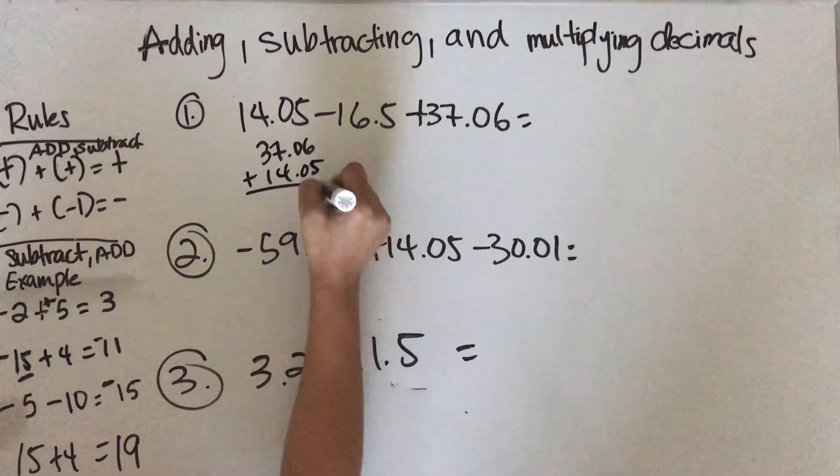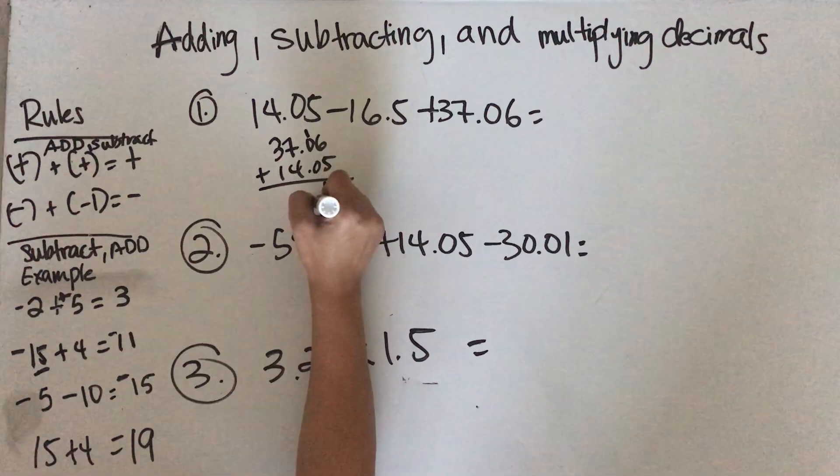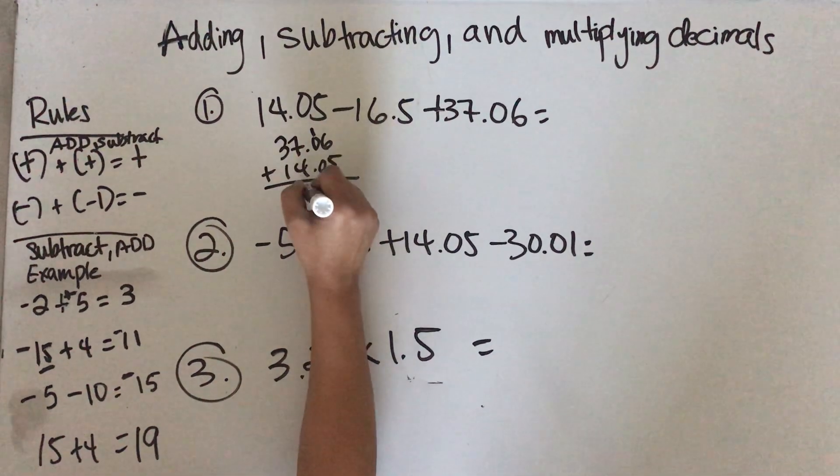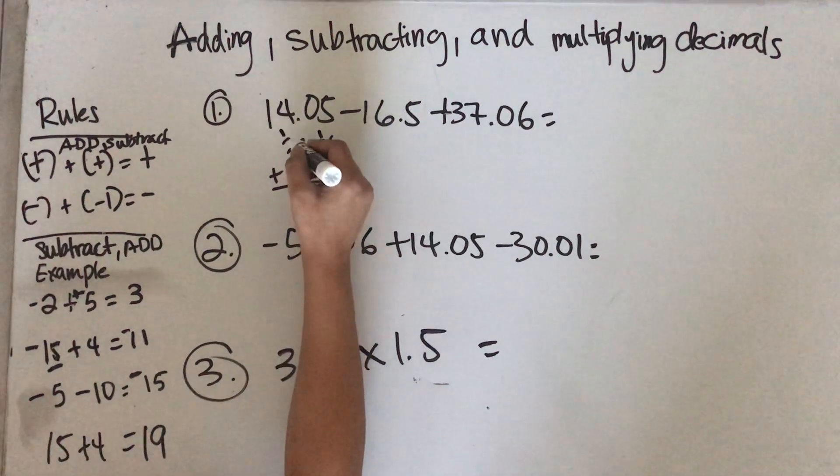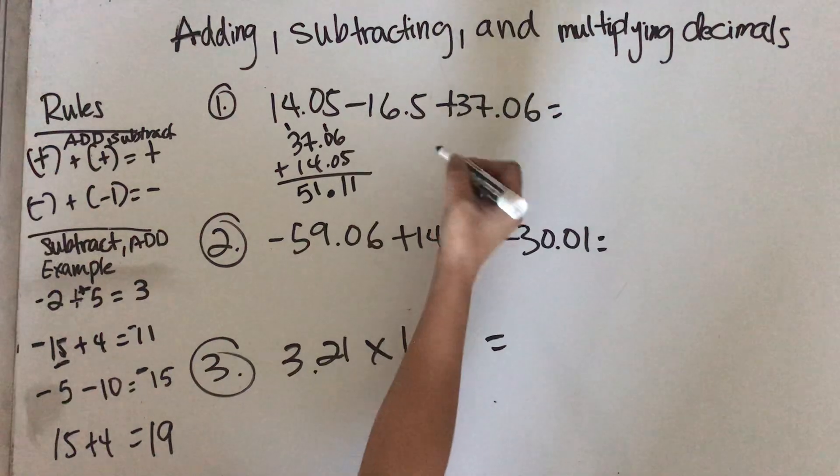6 plus 5 is 11, carry the 1, drop that. Make sure you align all your decimal points. 7 plus 4 is 11, carry 1. 3 plus 1 is 4, plus 1 is 5. That gives us 51.11.